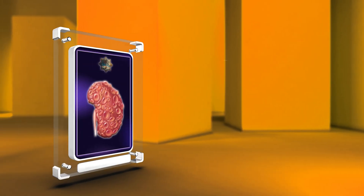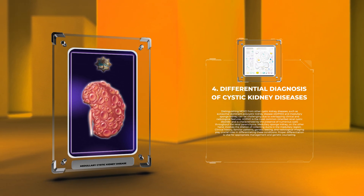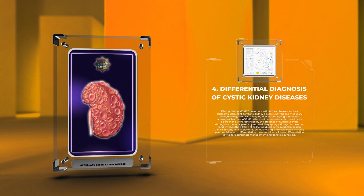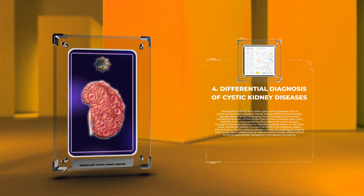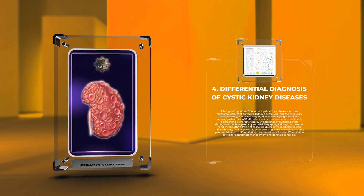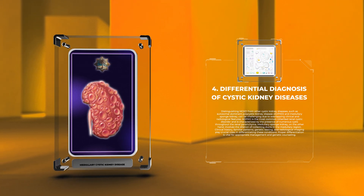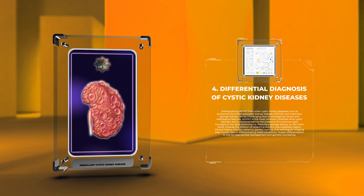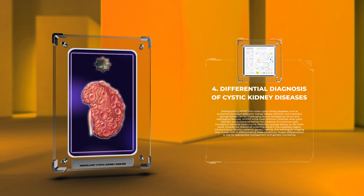Distinguishing MCKD from other cystic kidney diseases, such as autosomal dominant polycystic kidney disease (ADPKD) and medullary sponge kidney, can be challenging due to overlapping clinical and radiological features. ADPKD is the most common inherited renal cystic disorder, characterized by numerous cysts throughout the renal parenchyma, while medullary sponge kidney involves dilation of collecting ducts in the medullary region. Clinical history, familial patterns, genetic testing, and radiological imaging play crucial roles in differentiating these conditions, and proper differentiation is vital for appropriate management and genetic counseling.